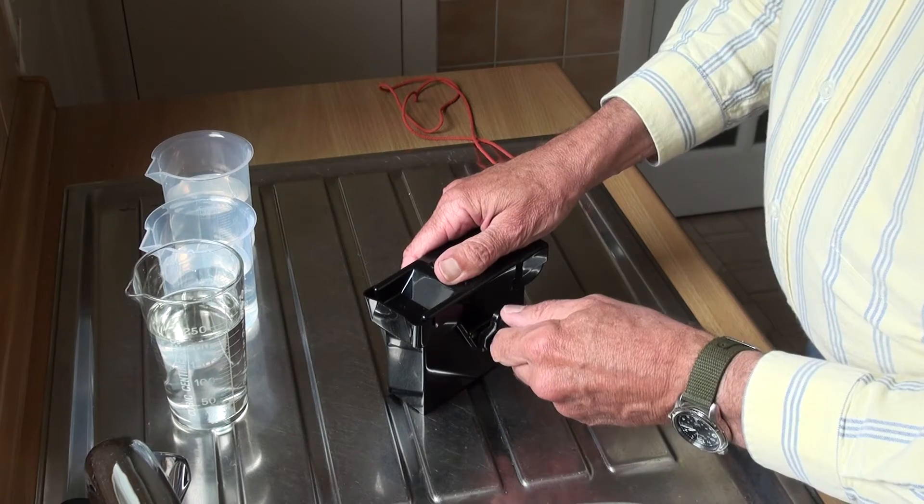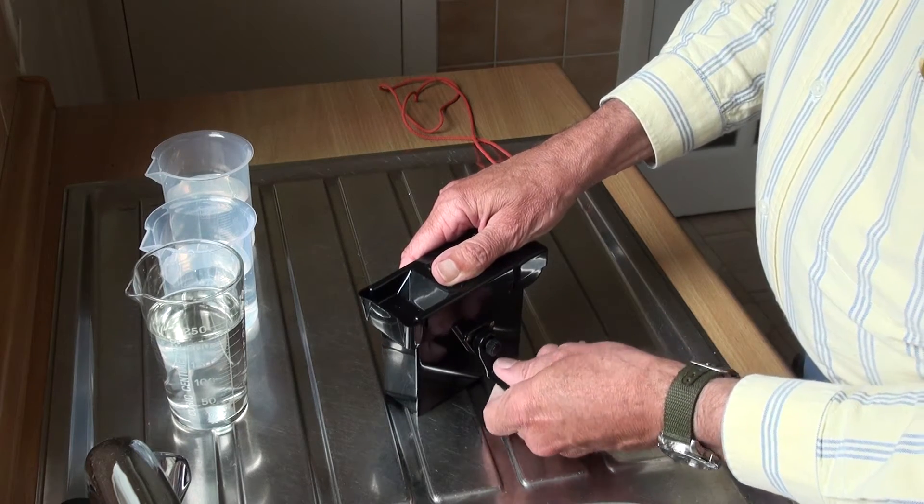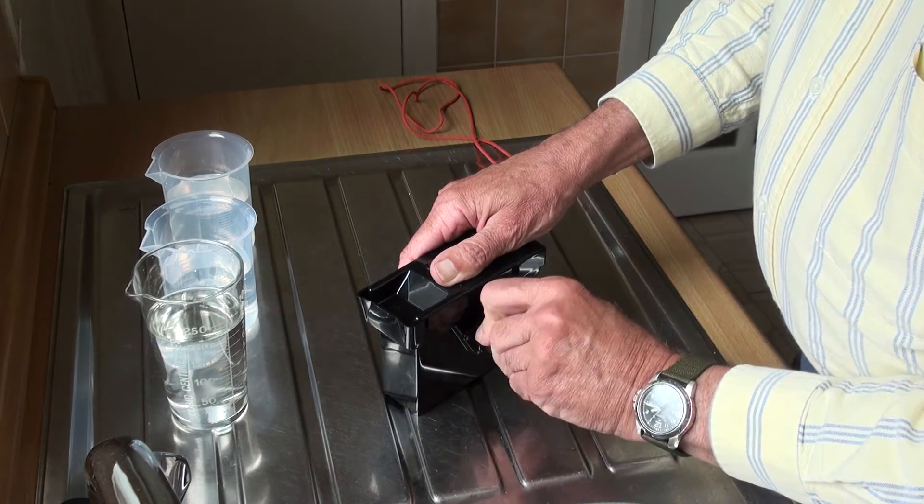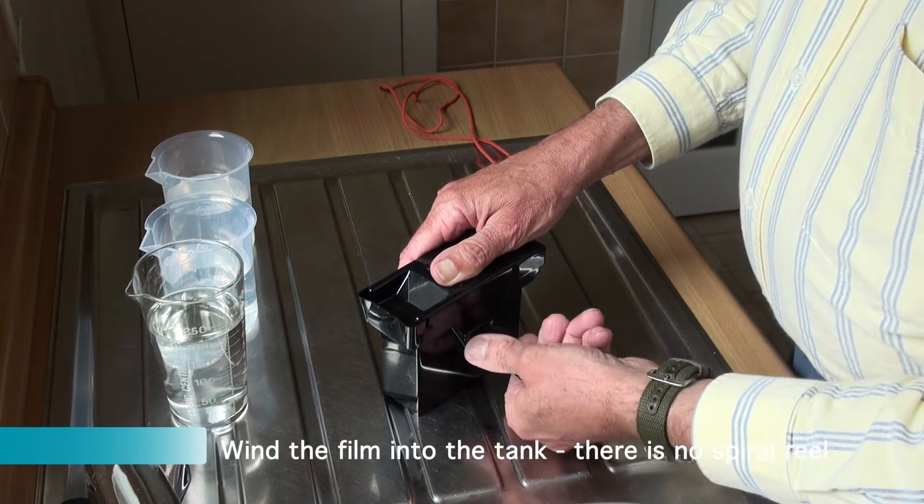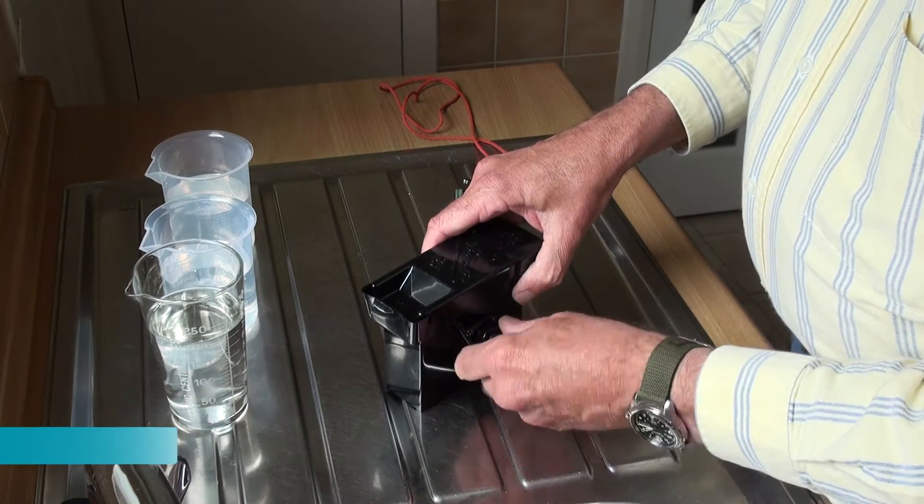Now you can either add developer at this stage, which I normally do but I'm not doing in this case, or later. And now the film is simply wound into the tank from the cassette.